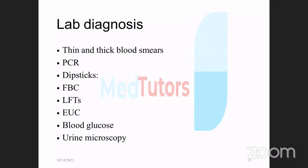For investigations, we commonly do rapid diagnostic tests, thick and thin blood smears, serology, and PCR. Full blood count helps check for complications like anemia and low platelets from DIC, and helps rule out differentials. Liver function tests are done since malaria can affect the liver, and electrolytes, urea, and creatinine assess kidney function.